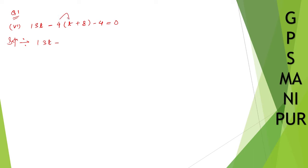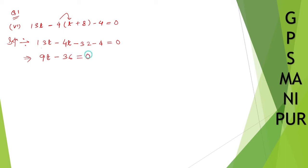Multiplying 4 into the bracket: 4 into t gives 4t, minus into plus gives minus, and 4 into 8 gives 32. So we have 13t minus 4t minus 32 minus 4 equals 0. Combining: 9t minus 36 equals 0.